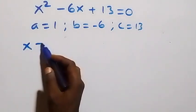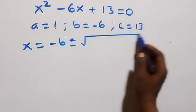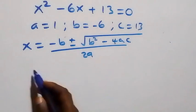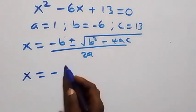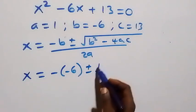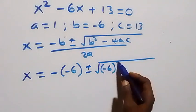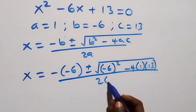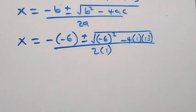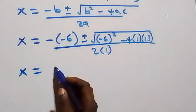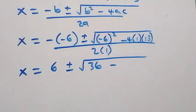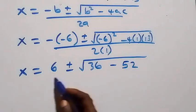Using the quadratic formula x equals [minus b plus or minus the square root of (b squared minus 4ac)] over 2a, we substitute: x equals [6 plus or minus the square root of (36 minus 4 times 1 times 13)] over 2. That gives 36 minus 52 equals minus 16 under the square root.